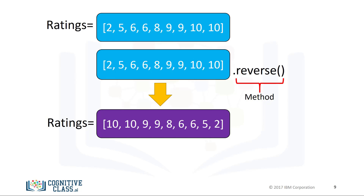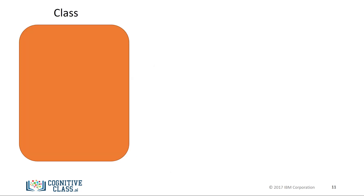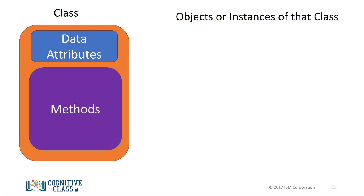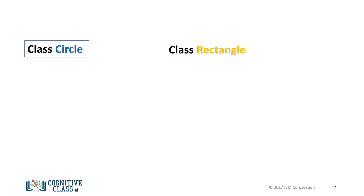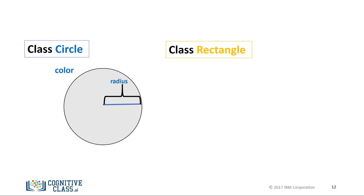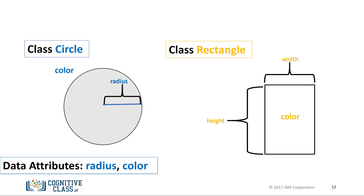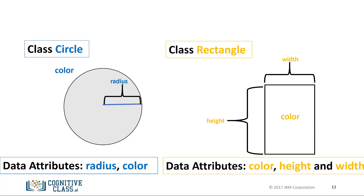Next we will cover how to construct your own classes. You can create your own type or class in Python. The class has data attributes and methods. The class data attributes define the class. Let's create two classes: the first class will be a circle, the second will be a rectangle. Examining the image, all we need is a radius to define a circle, and we'll add color to distinguish between different instances. Therefore our class data attributes are radius and color. Similarly, to define a rectangle we need height and width, and we'll also add color — so the data attributes are color, height, and width.